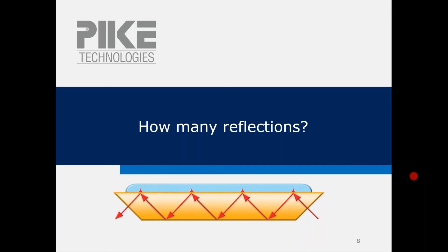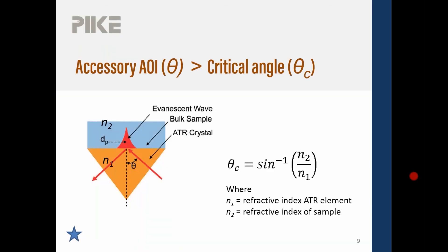We put that as the number of reflections on the sample. So to make ATR work, we must have the angle of incidence of the accessory greater than the critical angle. So in this little cartoon, this angle right here must be greater than this calculation right here. And the critical angle θc is a function of the refractive index of your sample n2 and the refractive index of the crystal n1. So let's go and do a quick Pike Calc.